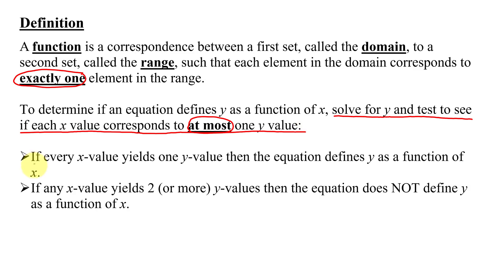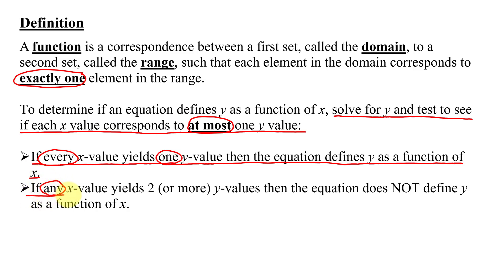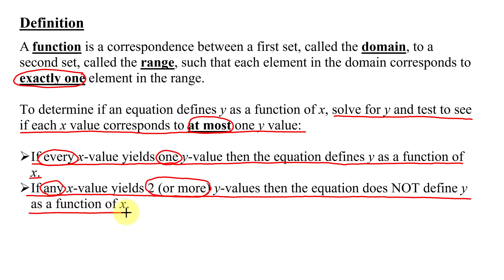To determine if an equation defines y as a function of x, I need to solve for y and test to see if each x value corresponds to, at most, one y value. If every x value yields one y value, then the equation defines y as a function of x. But if any x value yields two or more y values, then the equation does not define y as a function of x. For each equation, I'm going to solve for y and test to see if each x value corresponds to, at most, one y value.